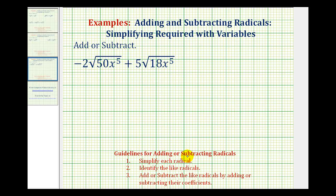The first step for adding or subtracting radicals is to simplify the radicals. Then once they're simplified, we can identify the like radicals and then add or subtract the like radicals by adding or subtracting the coefficients.